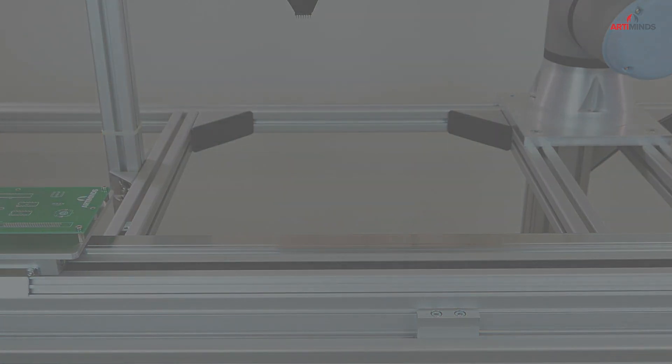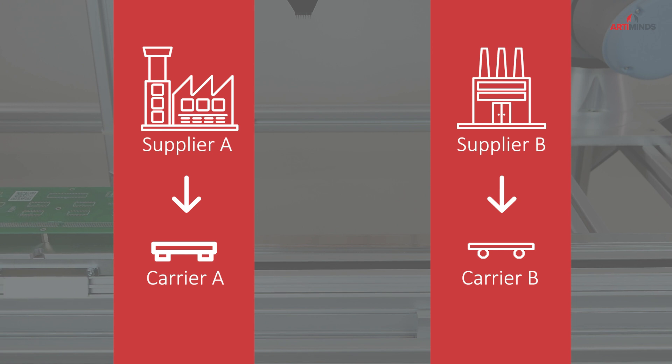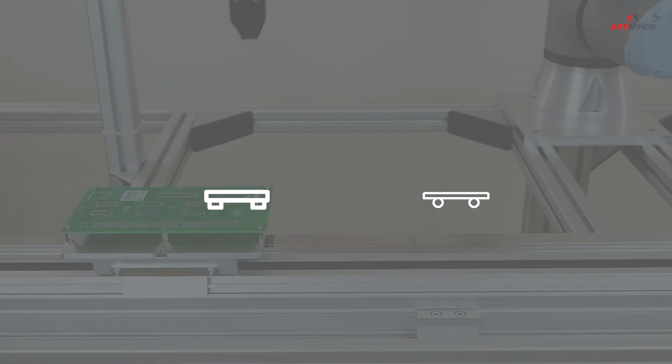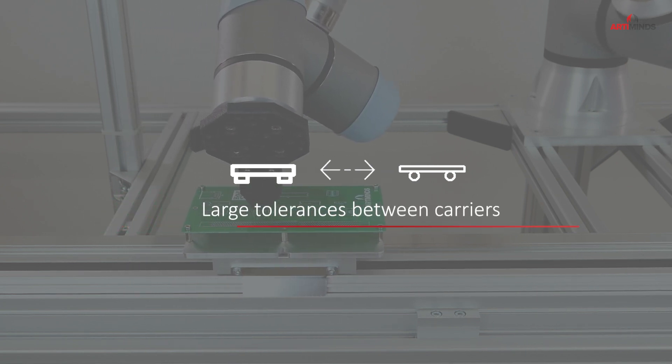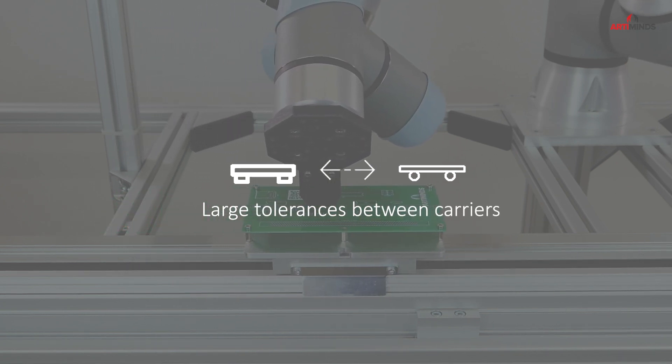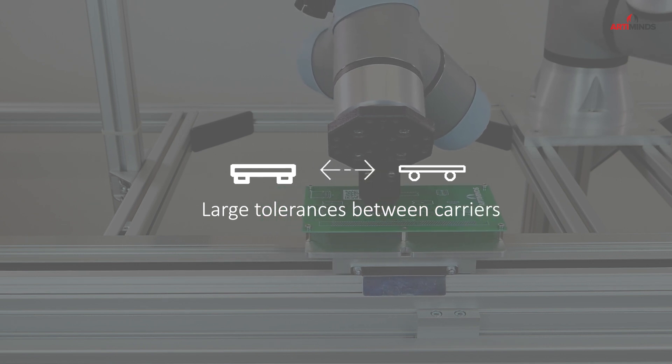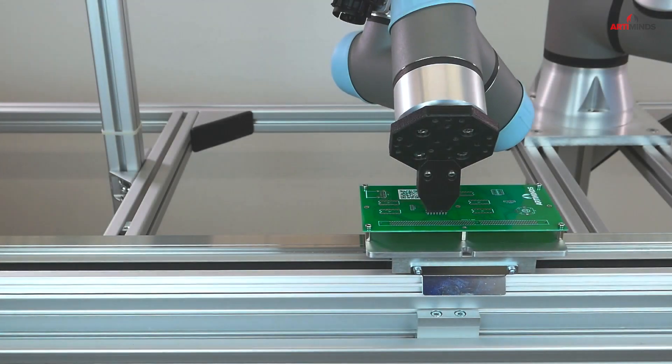Since carriers of this kind are often sourced from different suppliers and are subject to constant wear and tear, there can be large tolerances between them. To determine the individual carrier-specific optimal start point is usually not economically feasible, even for an expert in robotics.